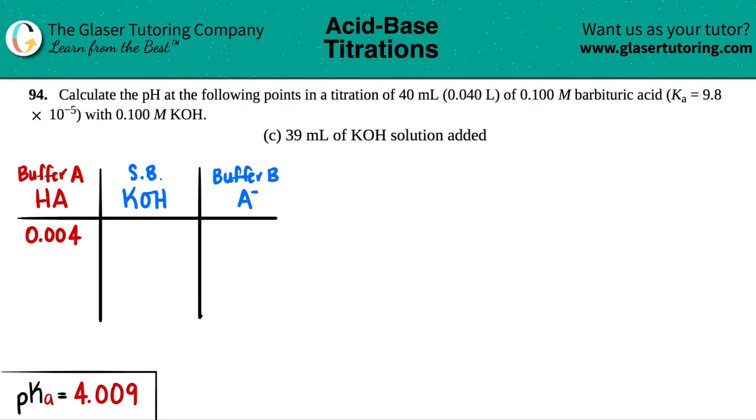Number 94: Calculate the pH at the following points in a titration of 40 mL, which is 0.040 liters, of a 0.100 molar barbituric acid solution. It gave us a Ka of 9.8 times 10 to the negative fifth, and we're titrating that with 0.100 molar potassium hydroxide. In letter C, we are adding 39 mL of the potassium hydroxide to the solution.